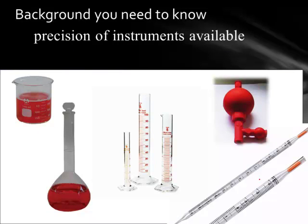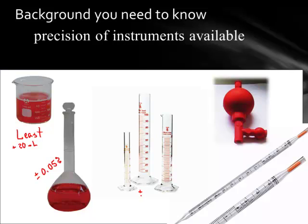Another piece of background you need to know is the precision of the instruments that are available. The beaker is going to be your least accurate measurement — you can usually only measure to the closest 25 milliliters, so at least plus or minus 20 milliliters. Big errors can result from using this for measurement. The volumetric flask is usually plus or minus about 0.05% of whatever the volume is, so fairly precise. The 100 milliliter graduated cylinder is measured to the closest plus or minus 0.1 milliliter, and the 10 milliliter graduated cylinder measures plus or minus 0.01 milliliter, if you're careful enough.